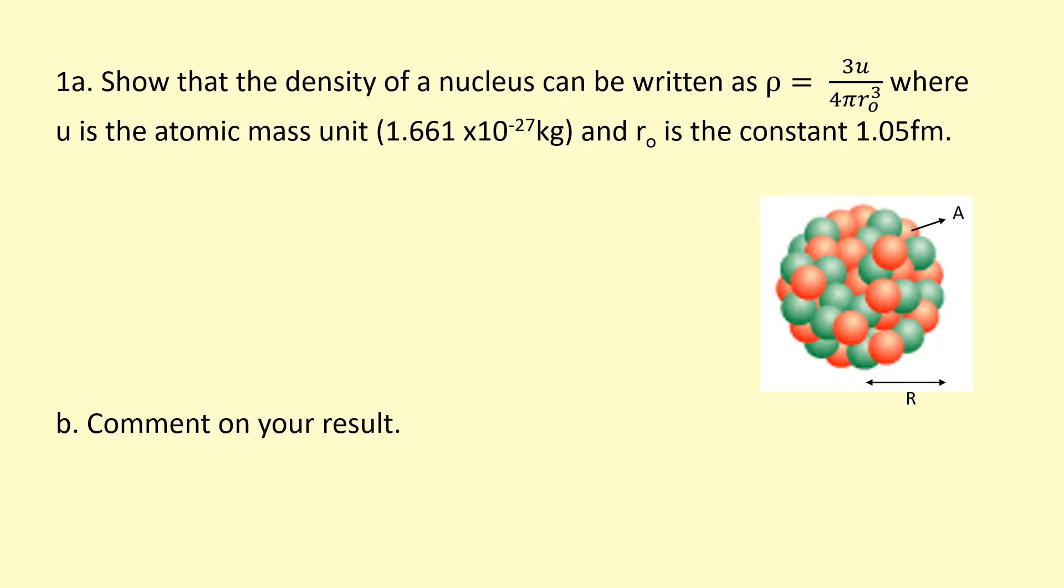Show that the density of the nucleus can be written as rho equals 3u over 4 pi r0 cubed, where u is the atomic mass unit. You can find this in your data sheet. It's like the average mass of a proton and a neutron. r0 is a constant, 1.05 femtometers.